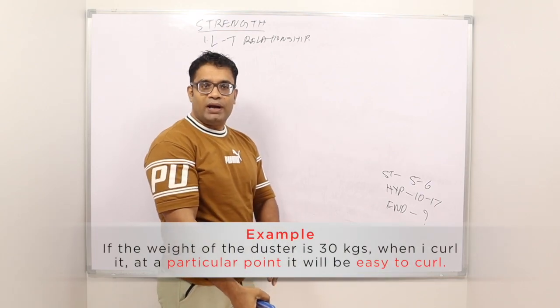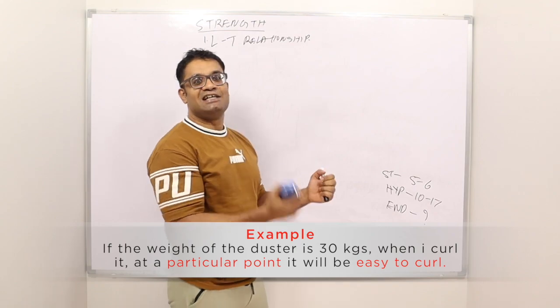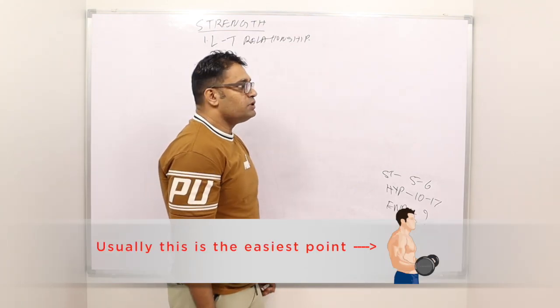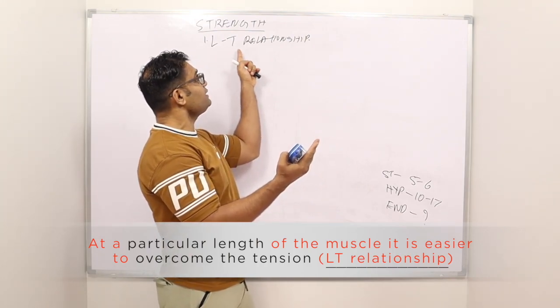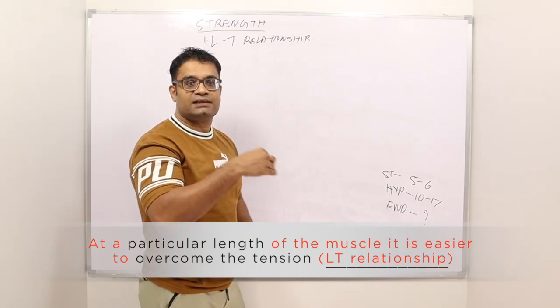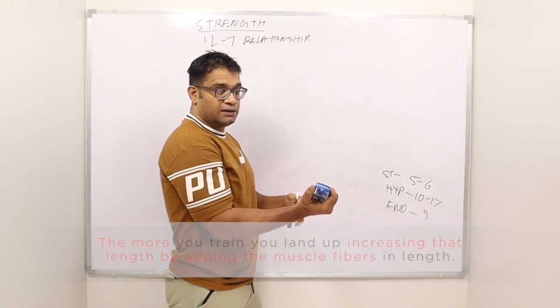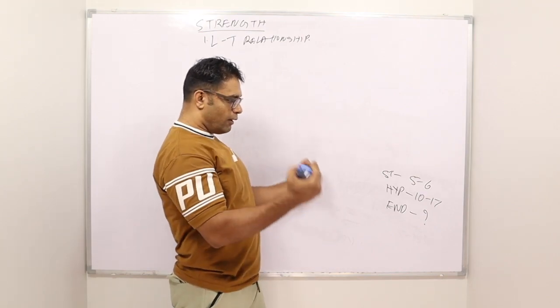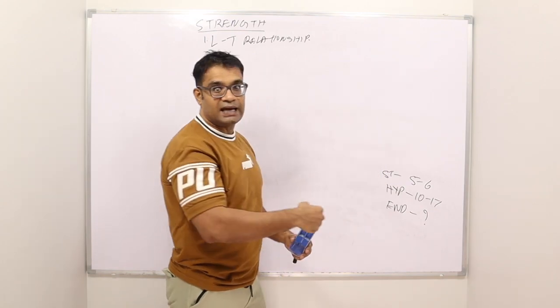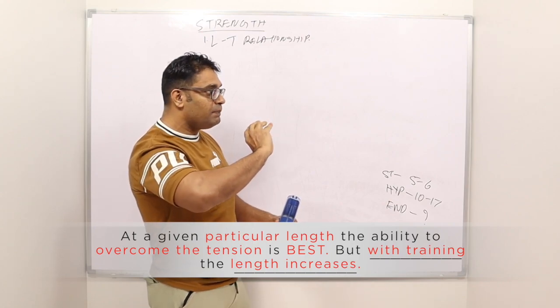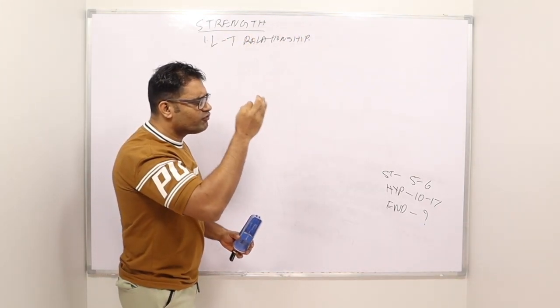Length-tension relationship. Very simply, I will explain this to you. You see this duster? If the weight is, say 30 kilos, when I curl it at one particular point I will find it very easy to curl, usually it is here. From here on it's difficult. Then at a particular length of the muscle, it is very easy to overcome the tension. The theory says that when you train, you land up increasing that length. So after some time, where it was easy here, it starts becoming easy here, all the way from here you go up. Increases the angle, adds the muscle fibers in length, and thereby increases the angle, length, the tension relationship. So at a given particular length, the ability to overcome the tension is best. But with training, that length increases. This is length-tension relationship in very simple words.